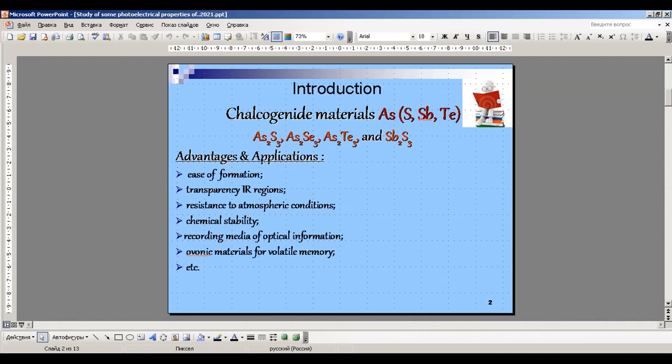Arsenic sulfur and arsenic selenium are good for recording medium of optical information, and stibium tellurium and arsenic tellurium are used for ovonic materials for collated memory.